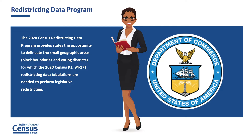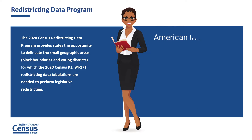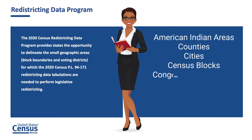Required by law under the provisions of Title 13, Section 141C of the United States Code, the Secretary of Commerce is required to provide the officers or public bodies having initial responsibility for the legislative apportionment or districting of each state with the opportunity to specify geographic areas such as blocks or voting districts for which they wish to receive decennial census population counts by April 1st of the year following the decennial census. The Secretary is required to furnish state officials or their designees with population counts for American Indian areas, counties, cities, census blocks, and state-specified congressional, legislative, and voting districts.